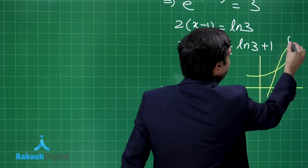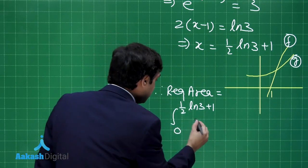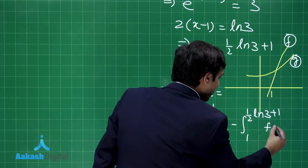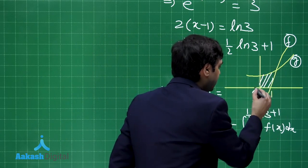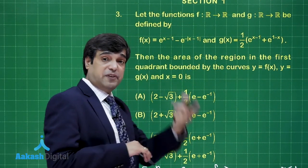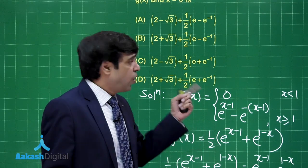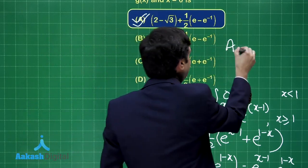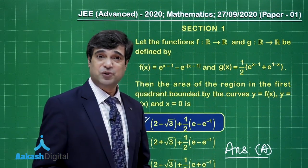Therefore, the required area equals the integral from 0 to (½ log 3 + 1) of g(x) dx, minus the integral from 1 to (½ log 3 + 1) of f(x) dx. Both g(x) and f(x) are simple exponential functions, so straightforward integration and applying the limits gives the final answer as Option A.